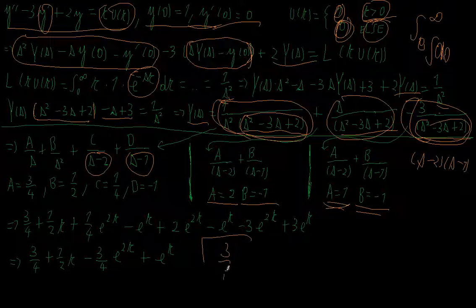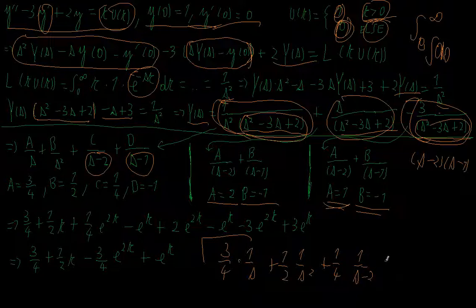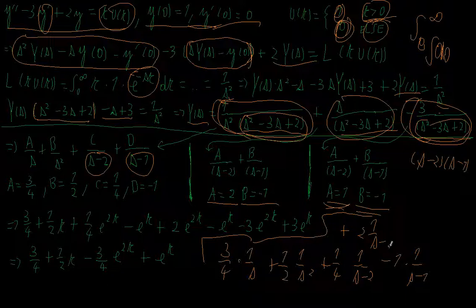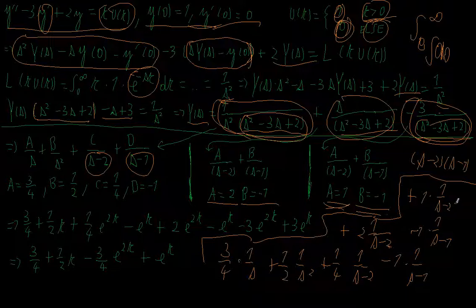Combining everything, I can rewrite Y(s) as: three-quarters times 1/s, plus one-half times 1/s squared, plus one-quarter times 1/(s minus 2), minus 1 times 1/(s minus 1), plus 1 times 1/(s minus 2), minus 1 times 1/(s minus 1).